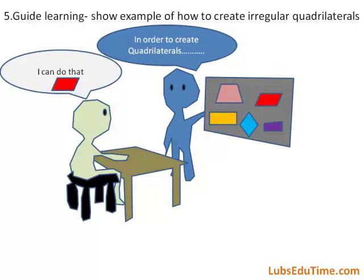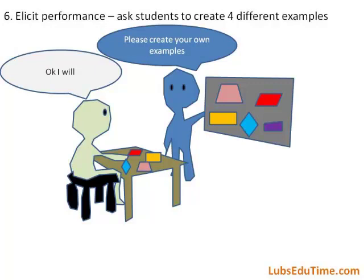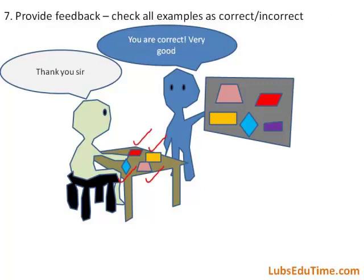Event 5: Guide learning. Show an example of how to create irregular quadrilaterals. Event 6: Elicit performance. Ask students to create four different examples.